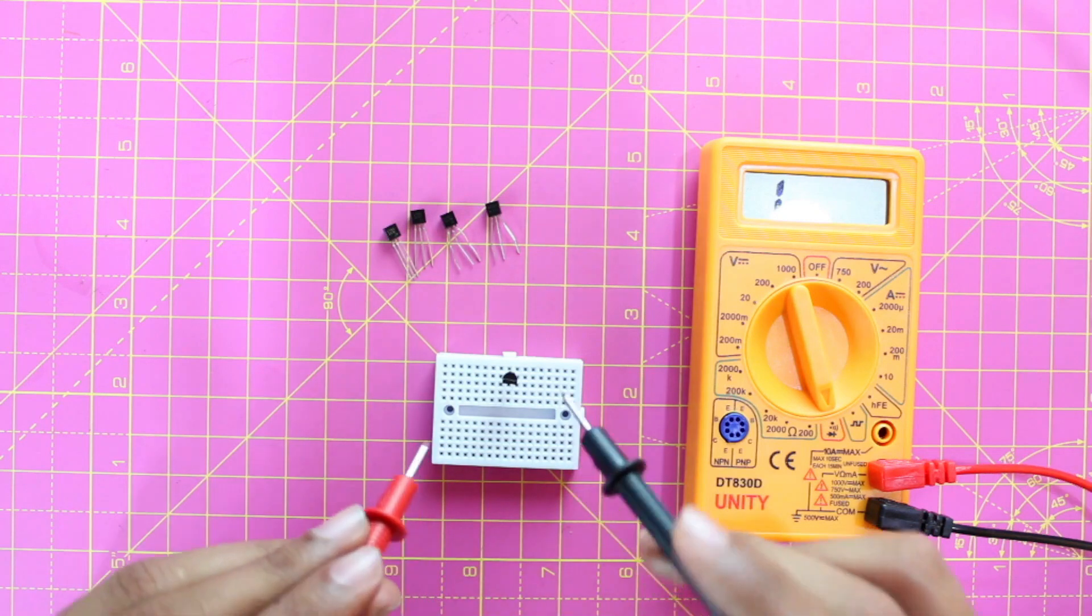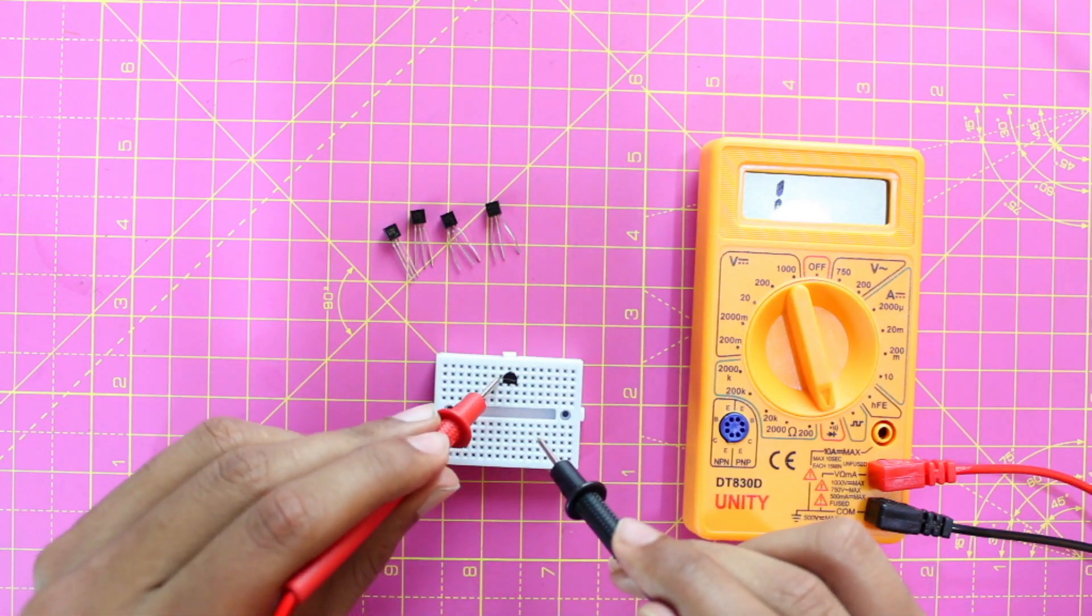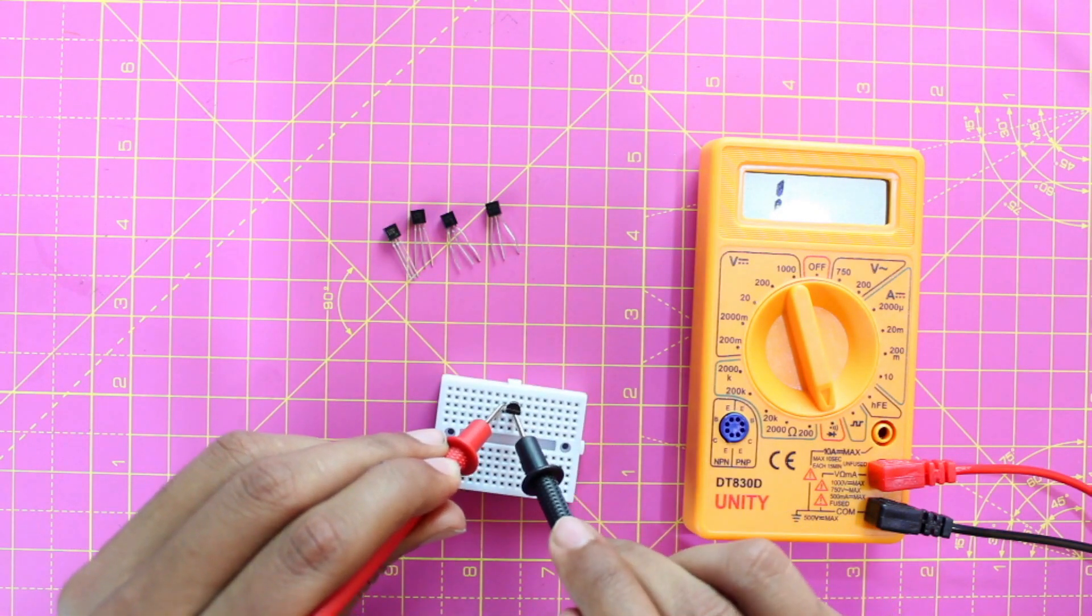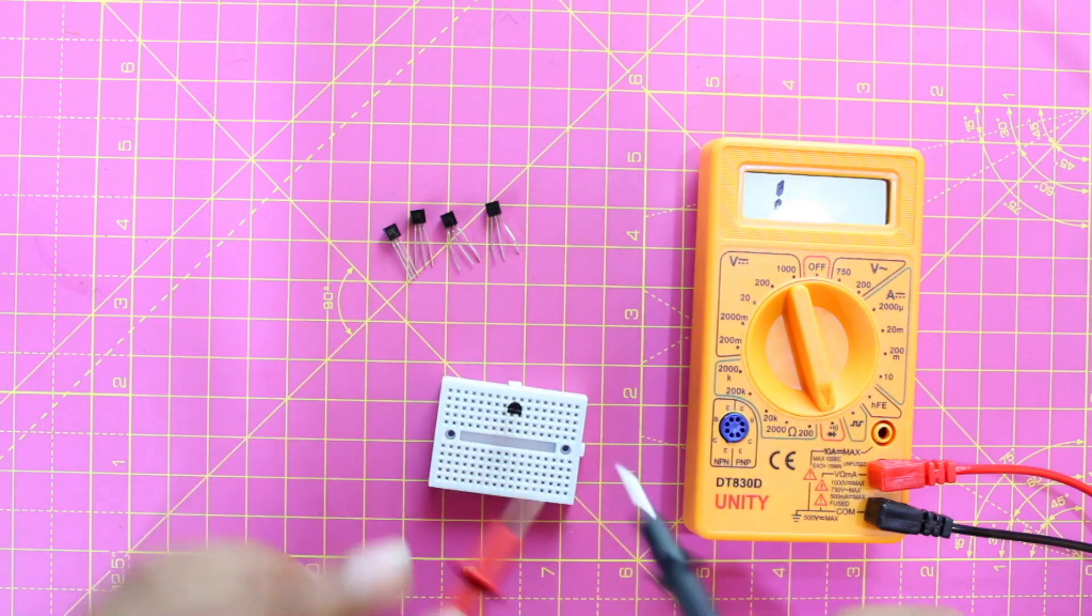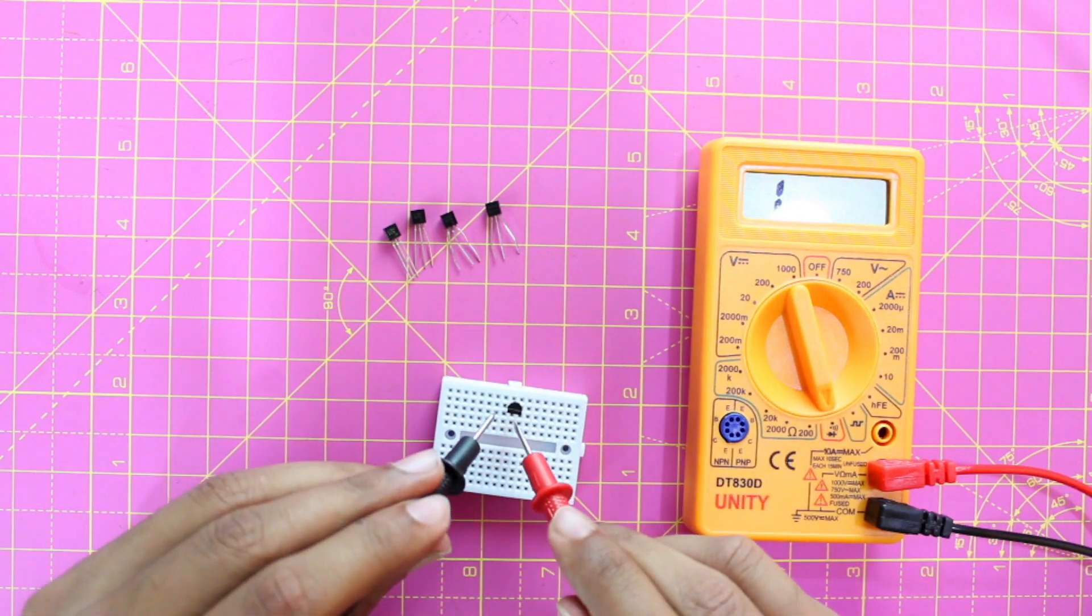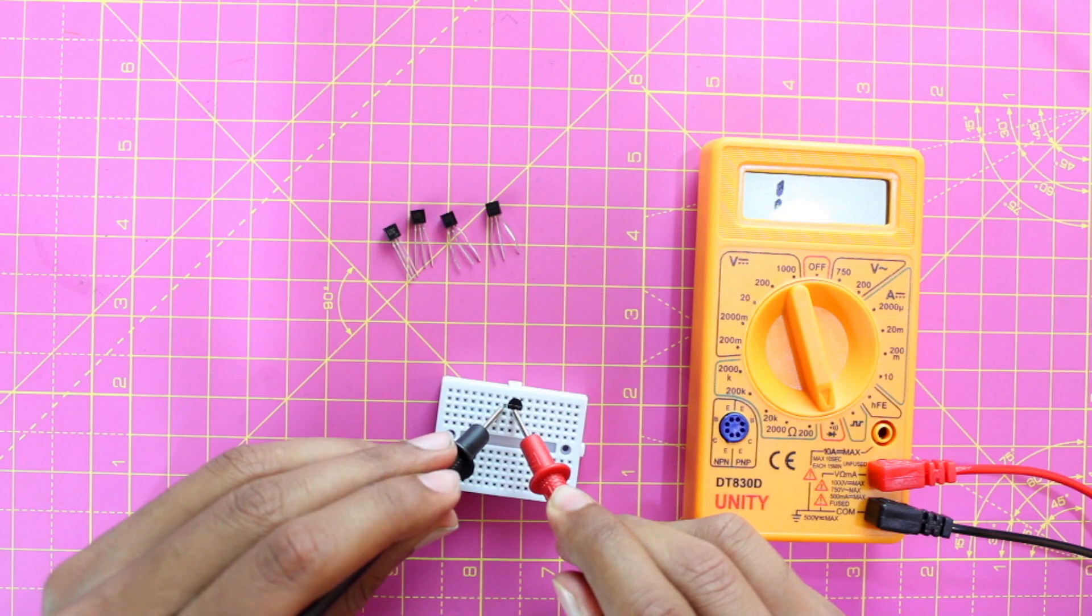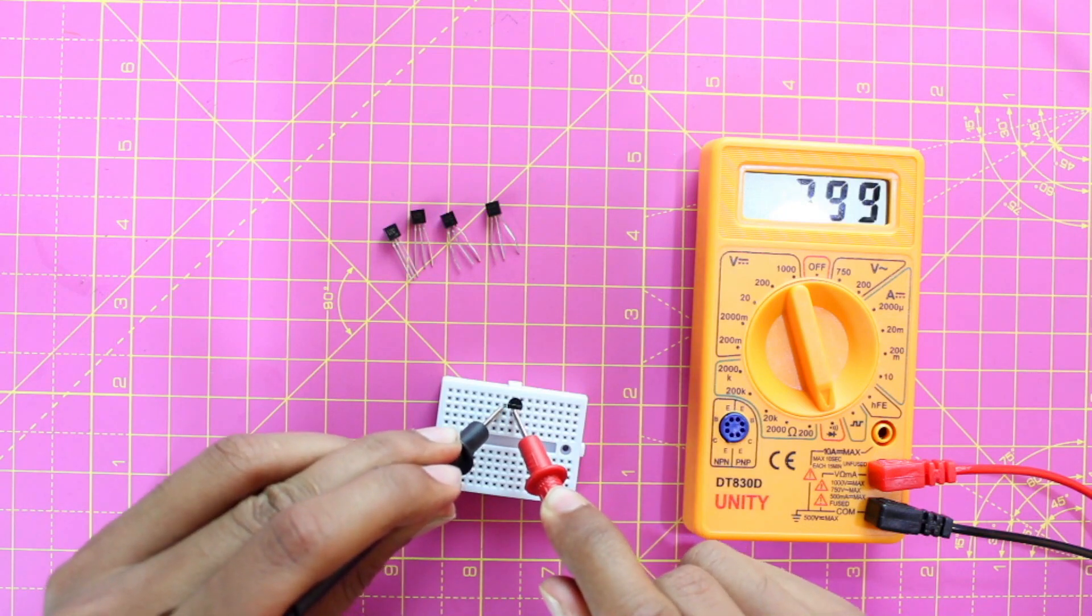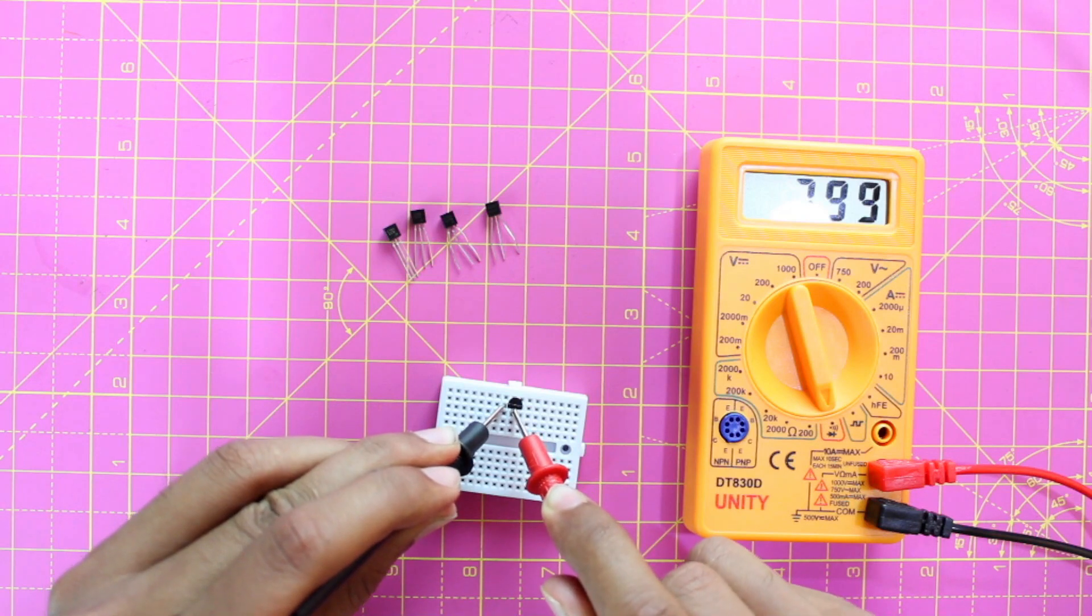Now if I have placed the probes in the opposite direction—say for example I place the red here and the black here—I would not get any voltage drop, so I just have to make sure that I place the probe right. So this is a hit and trial method: in some cases it will be black first and red next, in some cases it will be red first and black next. So this transistor is working.